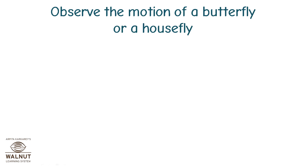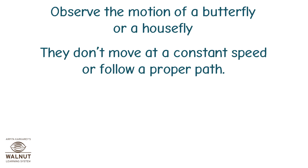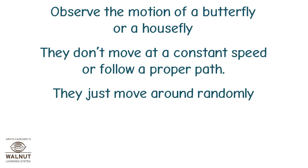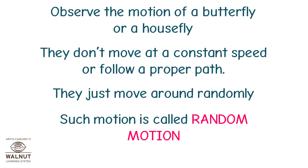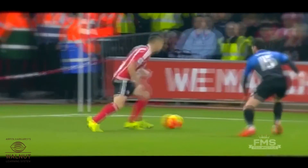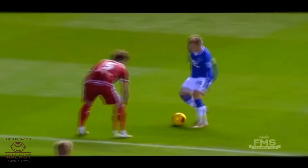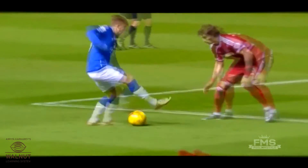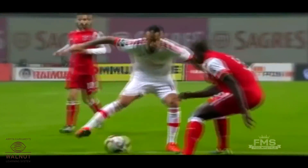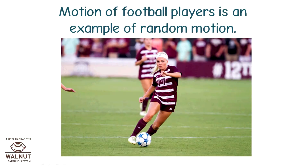Observe the motion of a butterfly or a housefly — they don't move at a constant speed or follow a proper path; they just move around randomly. Such motion is called random motion. Look at how footballers move — you can't predict how they are going to move. The motion of football players is an example of random motion.